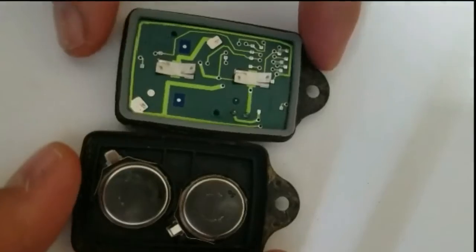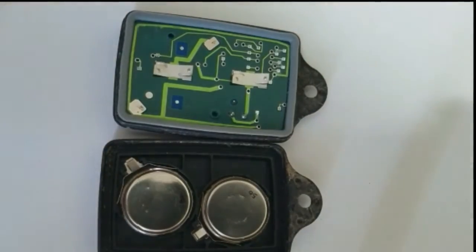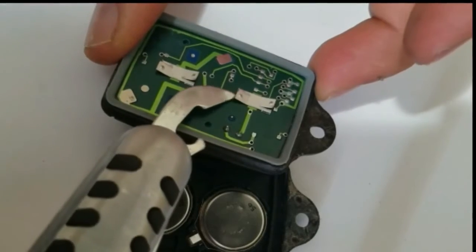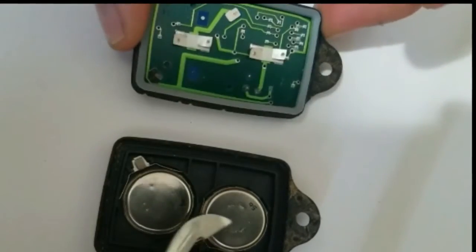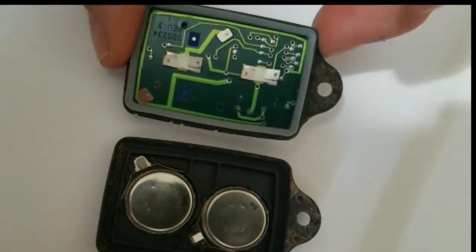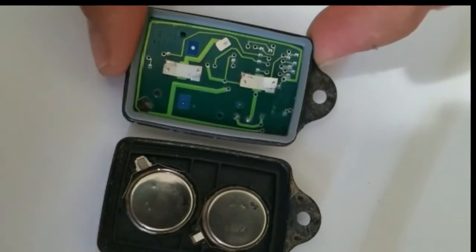Now we're getting ready to close the key fob. You need to be careful because if you look at these metal clips right here, they're supposed to be pushing on the face of the battery. And if they do not, the key fob might not work.